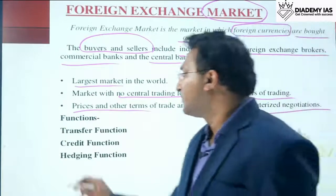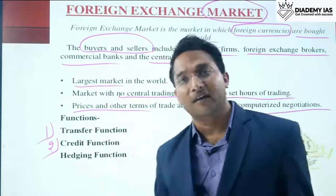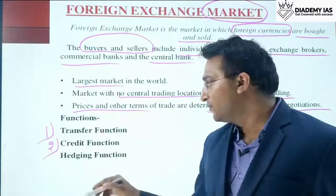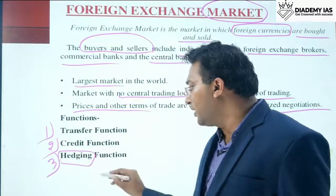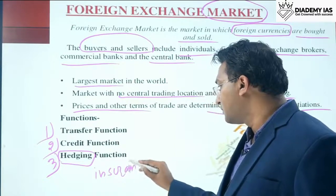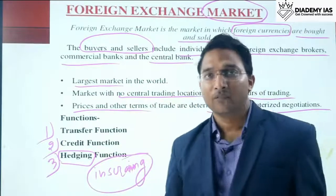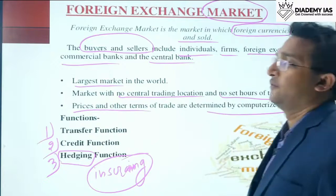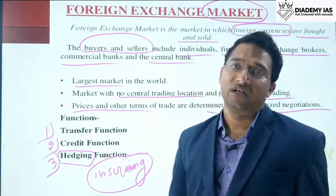The functions of the foreign exchange market are: first, the transfer function — transferring one country's currency into another. Second, the credit function — borrowing, etc. Third, the hedging function, which is basically a kind of insurance — ensuring the external value of a foreign currency. When an assurance is given that whatever the market rate of a foreign currency is in the future, you can buy or sell it at a fixed rate — that is hedging.